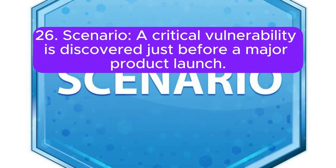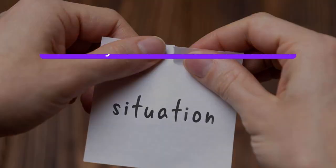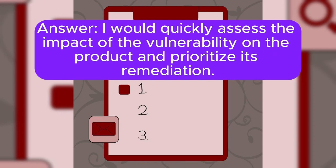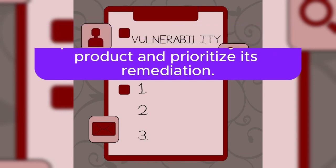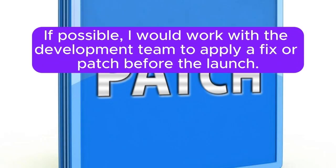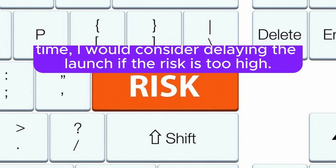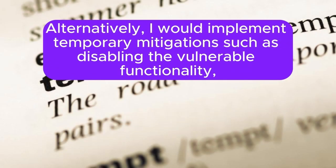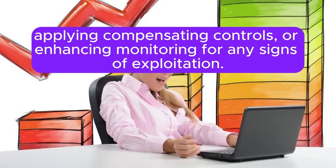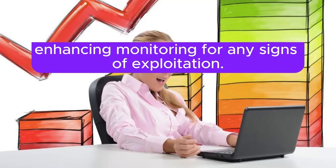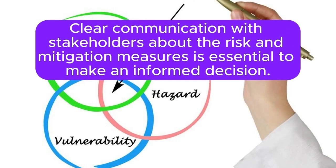Scenario 26: A critical vulnerability is discovered just before a major product launch. How do you handle this situation? I would quickly assess the impact of the vulnerability on the product and prioritize its remediation. If possible, I would work with the development team to apply a fix or patch before the launch. If a fix cannot be implemented in time, I would consider delaying the launch if the risk is too high. Alternatively, I would implement temporary mitigations such as disabling the vulnerable functionality, applying compensating controls, or enhancing monitoring for any signs of exploitation. Clear communication with stakeholders about the risk and mitigation measures is essential to make an informed decision.